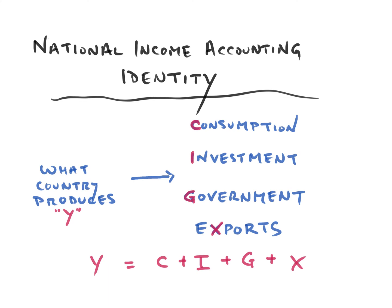This leads to what is described as the National Income Accounting Identity — an equation that must be true. This identity is usually written as Y = C + I + G + X. What a country produces is Y. C is for consumption, I for investment, G for government expenditure, X for net exports — the difference between exports and imports. It's a useful way of keeping in mind that this equation must always balance.